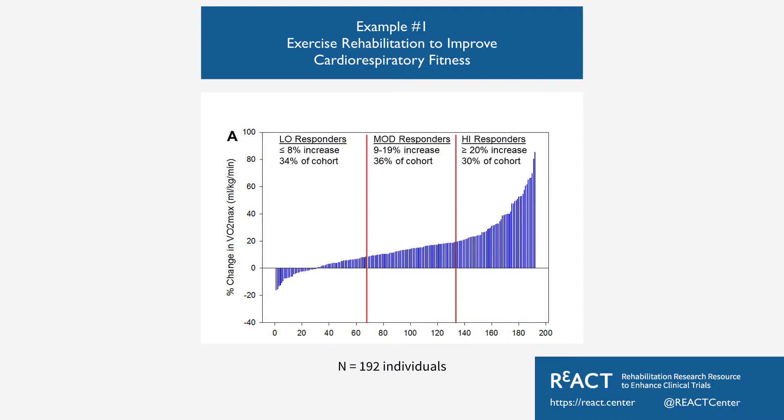What we find in most studies, particularly clinical trials, is that the entire focus is on the middle group. We look for a change in the average response, and if we see a statistically meaningful change in the average response, that leads us to say that the trial was successful. But what we ignore are those people at the two extremes. That variance around the mean is a very important consideration that we need to explore further.